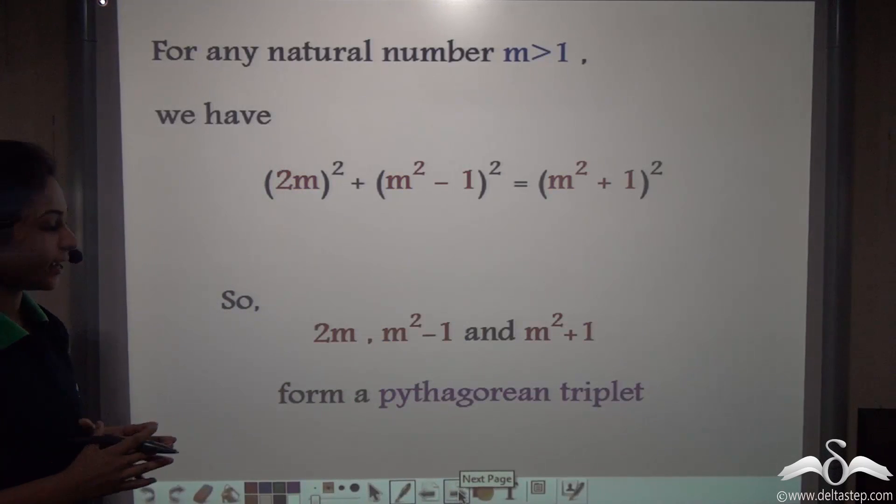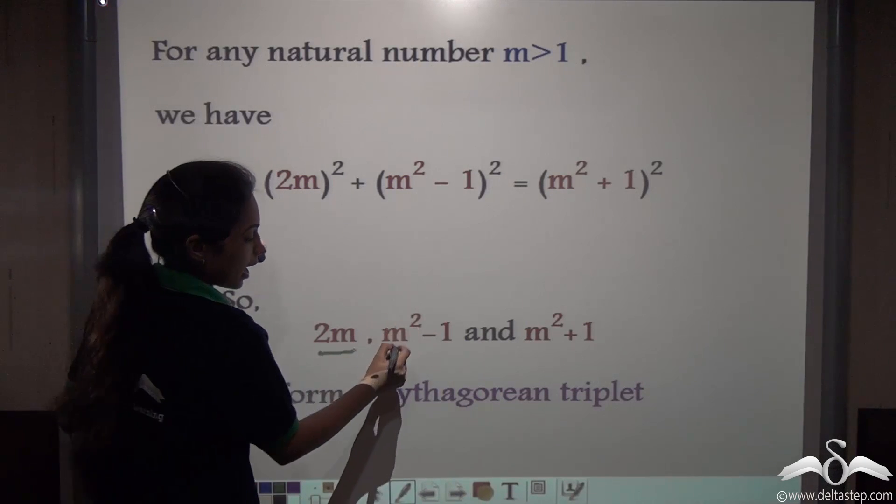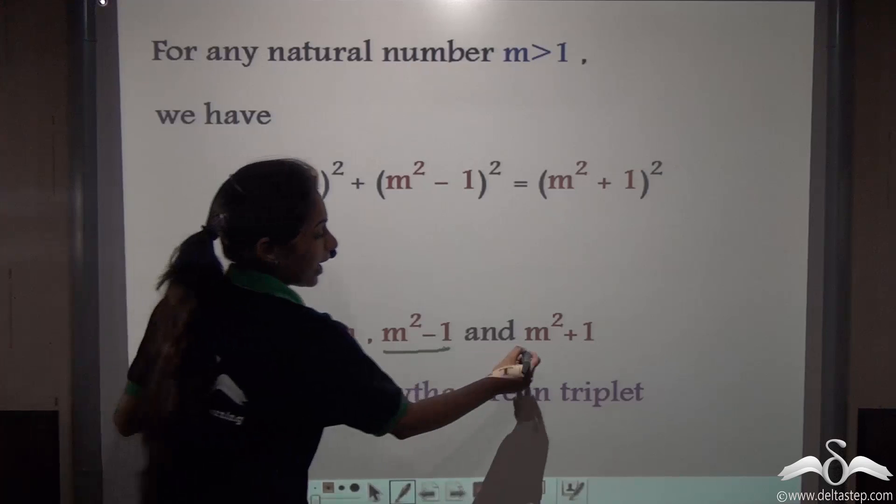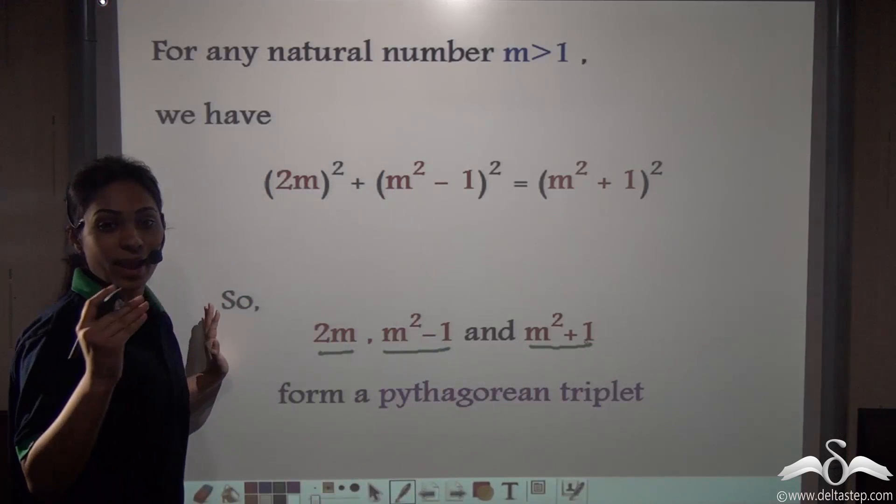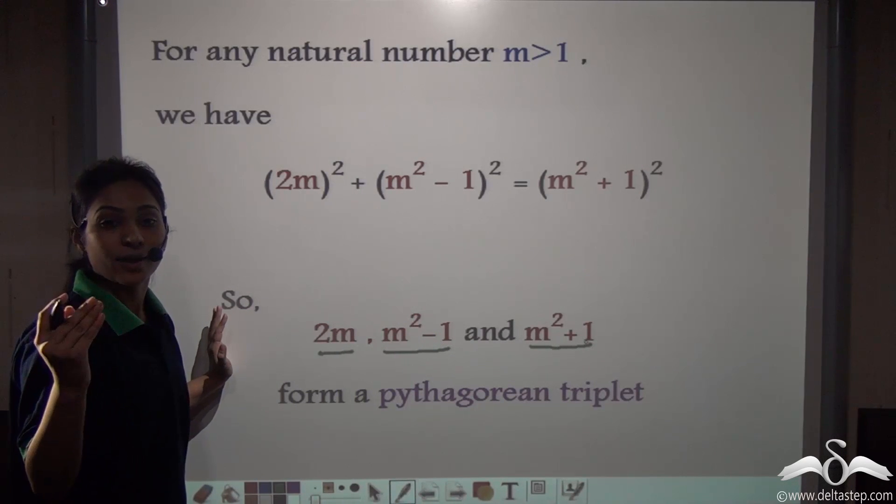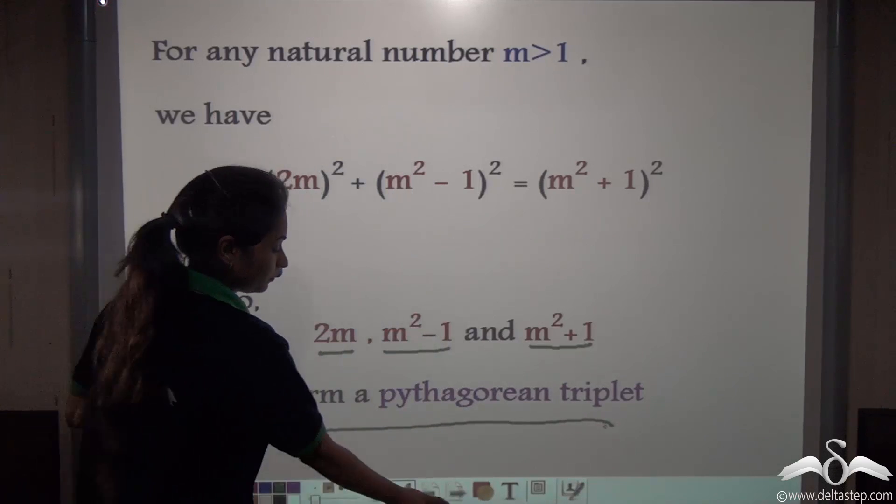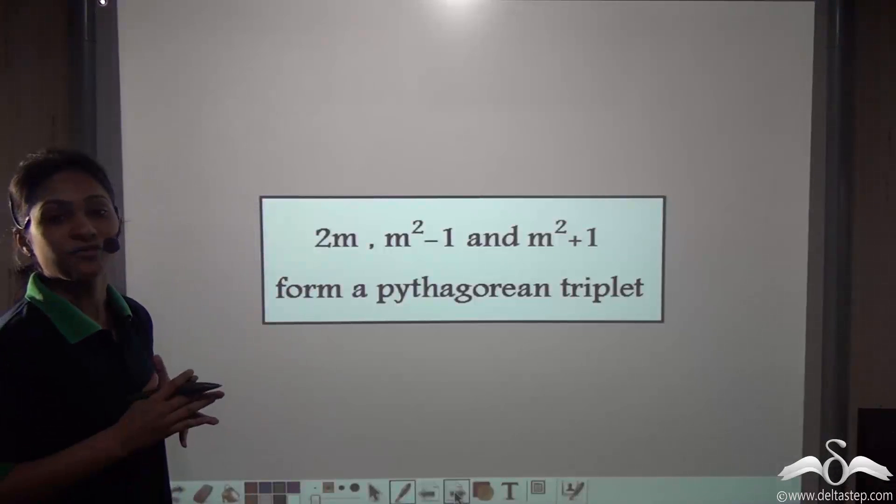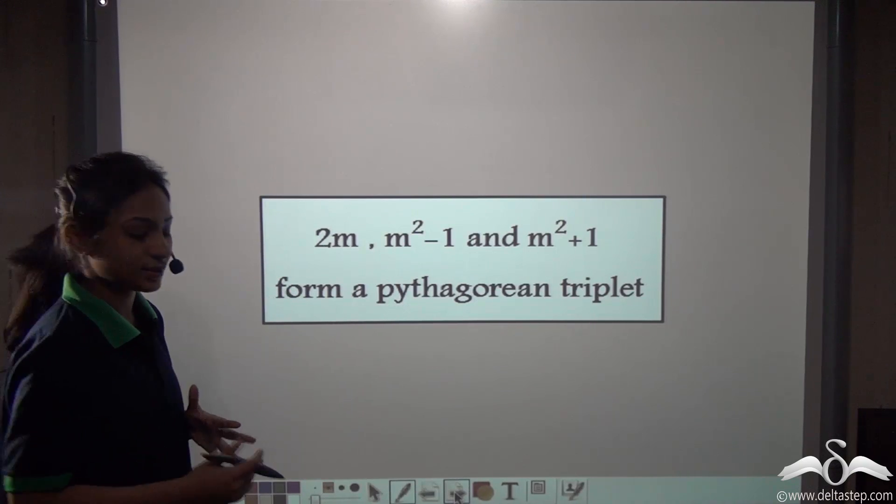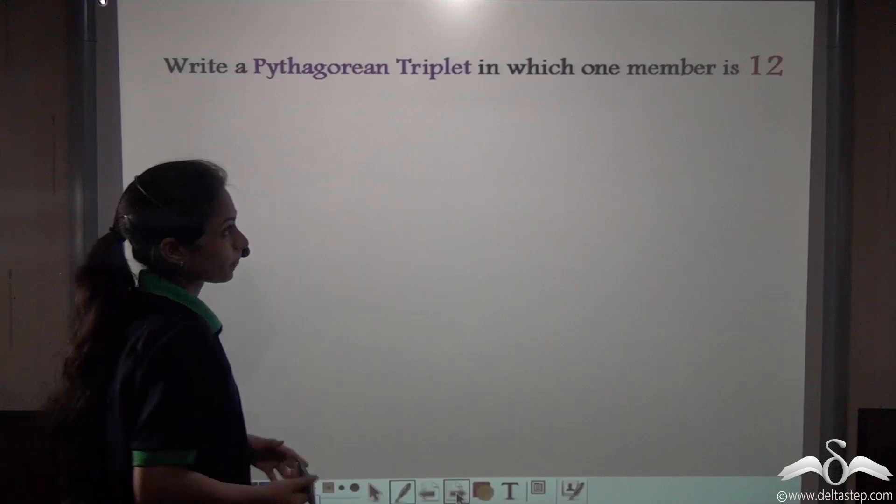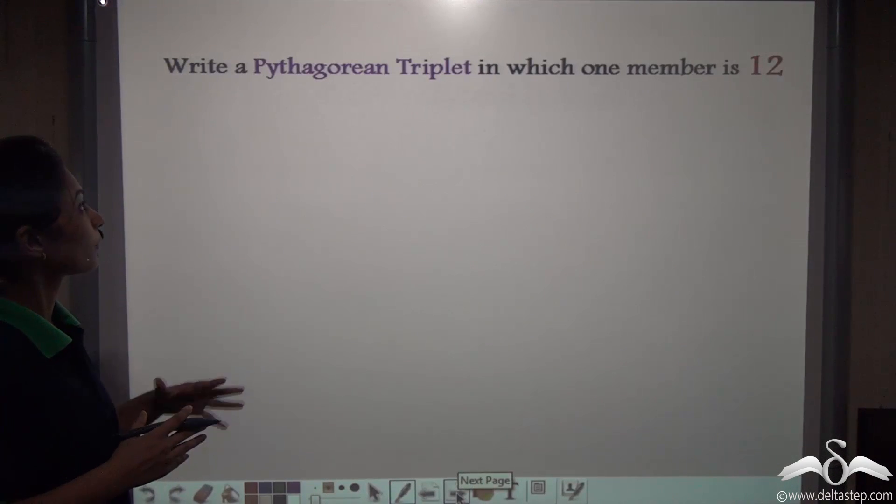So we can say that 2m, m squared minus 1, and m squared plus 1, where m is a natural number greater than 1, form a Pythagorean triplet. So using this you can find out unlimited number of Pythagorean triplets.